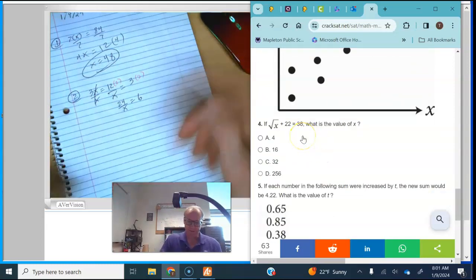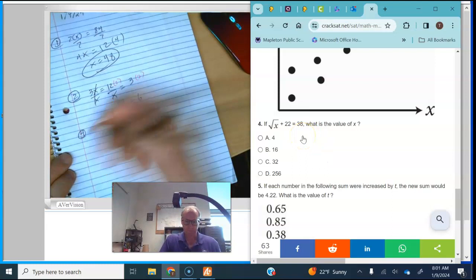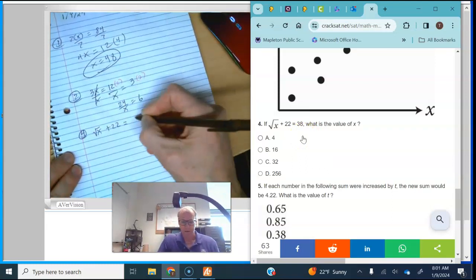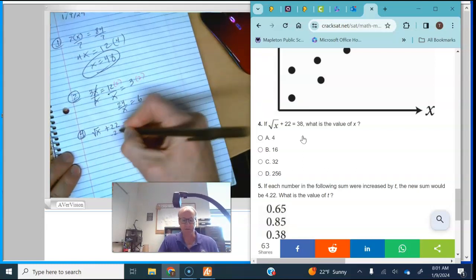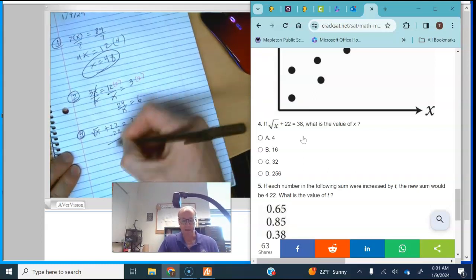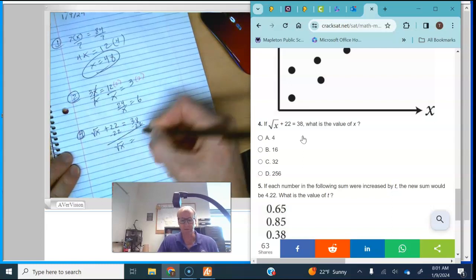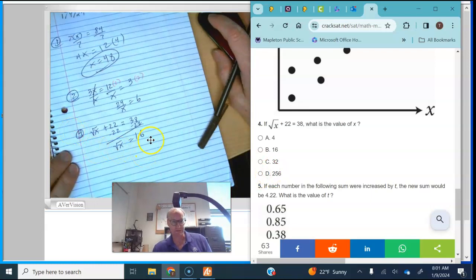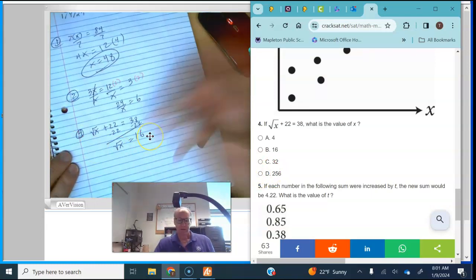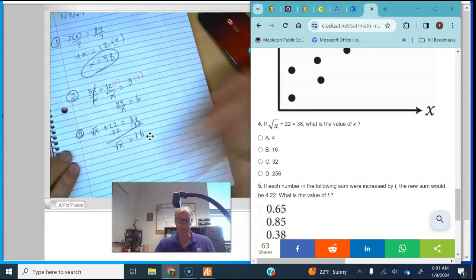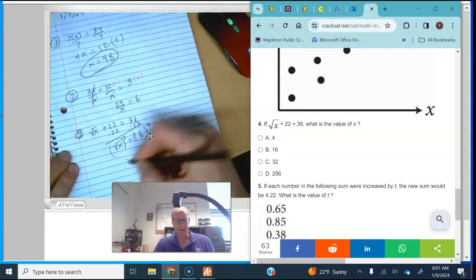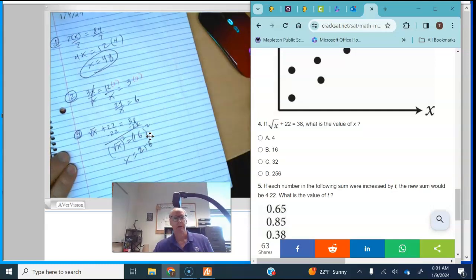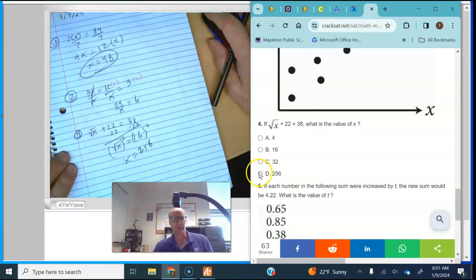Number four, it says if the square root of x plus 22, it's a little off center, is equal to 38. I just subtract 22 and I get the square root of x is equal to 16. Now a lot of people are going to take the square root of both sides, but that's not what they want. They do not want you to take the square root. They want you to square both sides and x is equal to 256, which is the square of 16. And that's what we were looking for on that one.